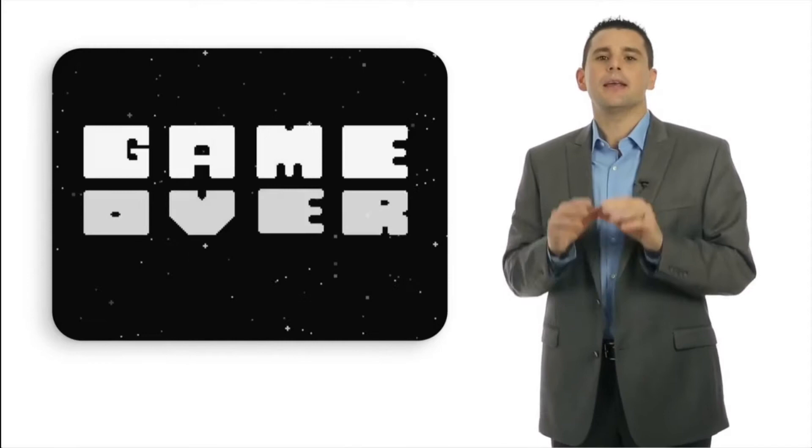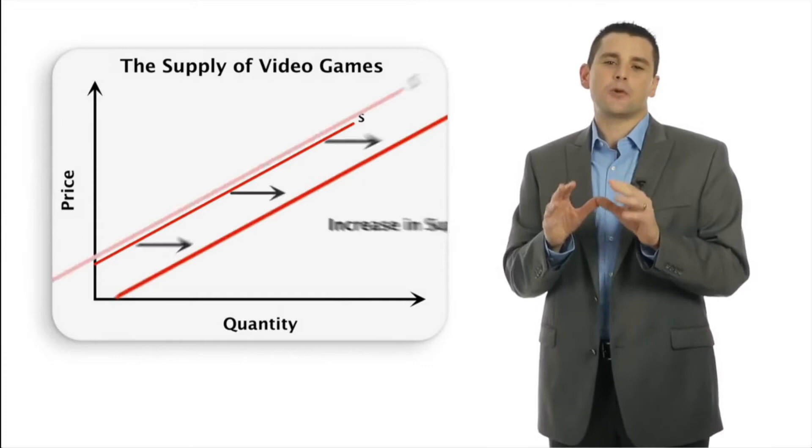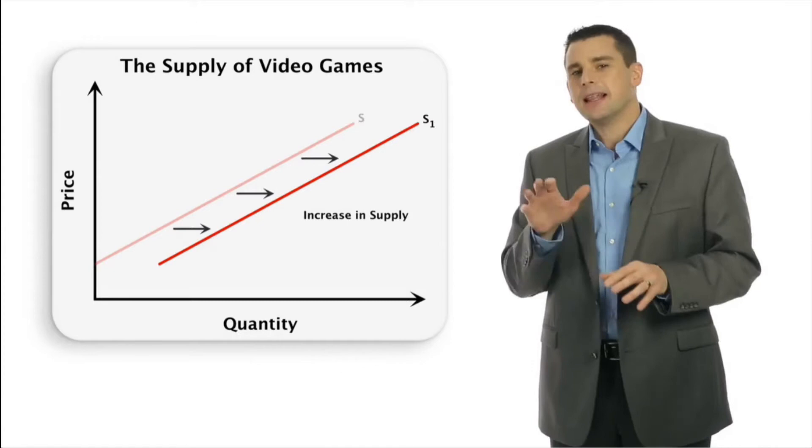increasing production. We represent the increase in production by shifting the supply curve to the right from S to S1.